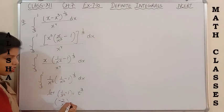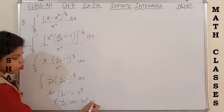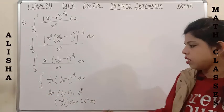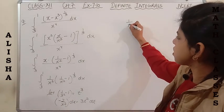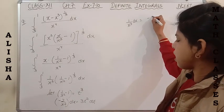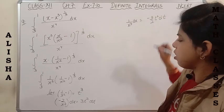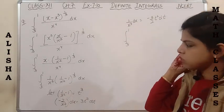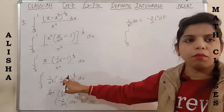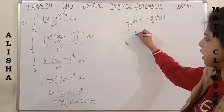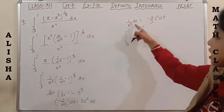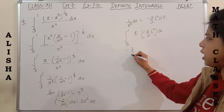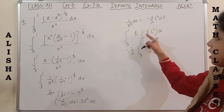Taking the value of 1/x³ dx: it becomes (-3/2) t² dt. The value of (1/x² - 1)^(1/3) is t³^(1/3) = t, and the value of 1/x³ dx is -3/2 t² dt. So taking -3/2 outside: t² × t = t³, and the integral of t³ is t^4/4.